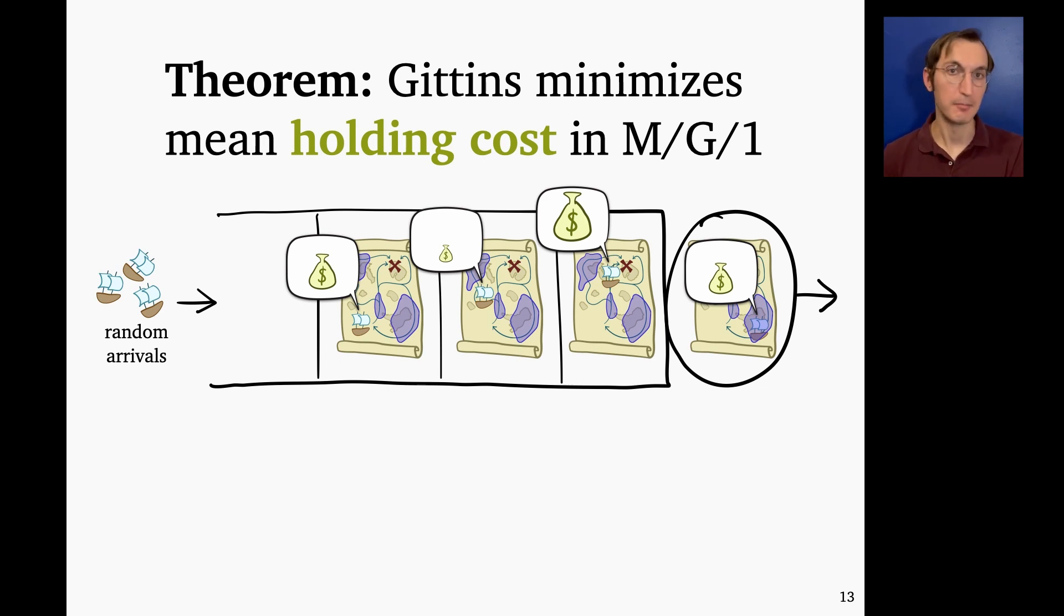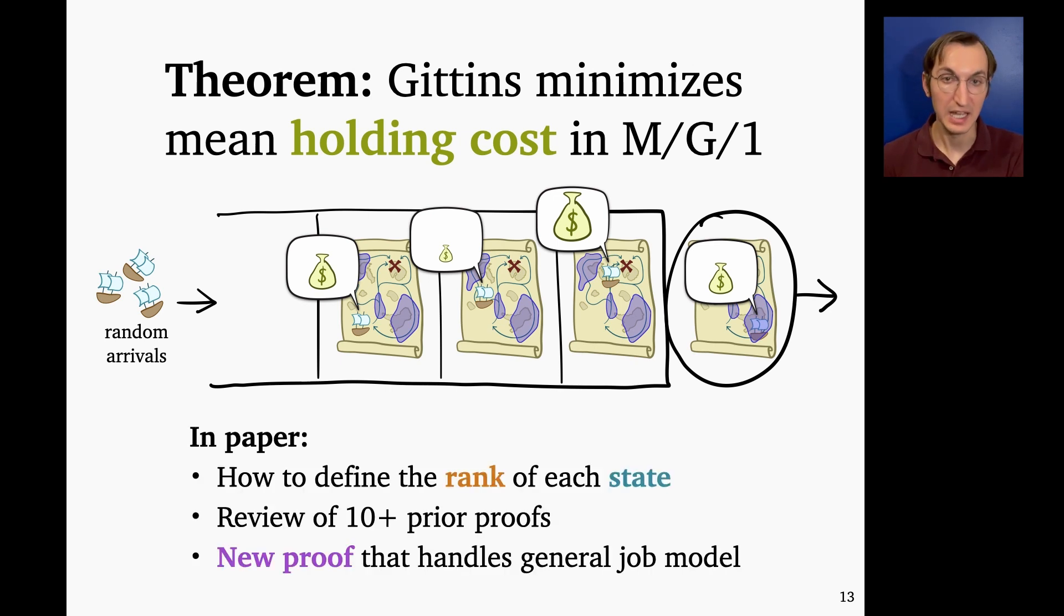So in the paper, you can get more details about all of these definitions, in addition to other content like how we actually define the rank of each state, that is how we define the Gittins policy. And you'll also find an extensive review of prior work where we go over exactly what corners of the space have been explored and what limitations apply to those previous explorations. And then finally, we give, of course, a new proof that applies in our very general setting.